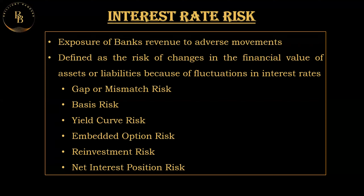For example, suppose you own a 10-year bond with a face value of ₹1,000 and a fixed annual coupon rate of 4%, meaning you receive ₹40 in interest payments every year, and the current market interest rate is also 4%. In the first scenario where there is no interest rate change, the rate remains constant at 4% throughout 10 years. You receive ₹40 annually, the bond's market value remains stable, and after 10 years you receive the face value of ₹1,000 back.